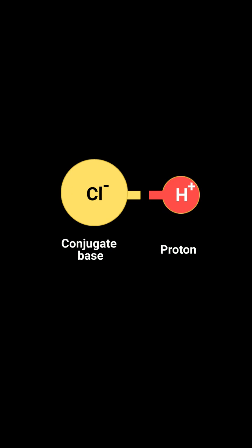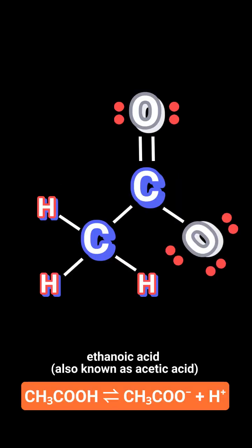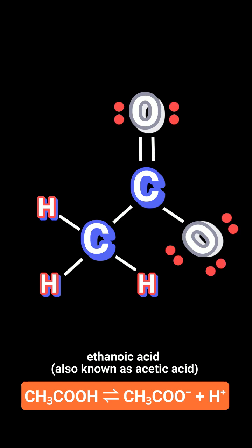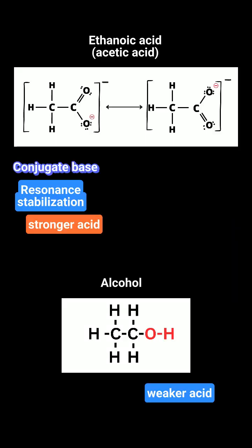Recall that resonance happens when a molecule can spread out its electrons over multiple atoms, rather than keeping them bound to one atom. A molecule whose conjugate base is stabilized by resonance is likely to be a stronger acid than a similar molecule without resonance stabilization. This is because resonance delocalizes and stabilizes the negative charge on the conjugate base, making the acid more willing to donate a proton.